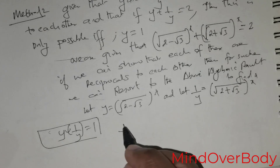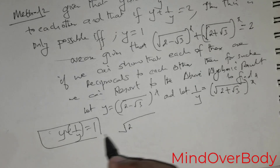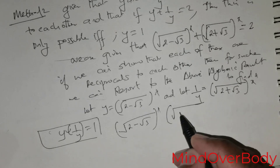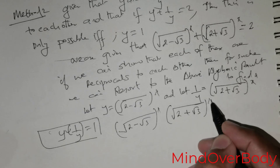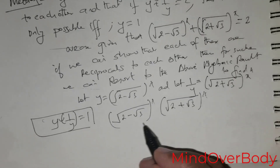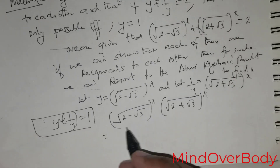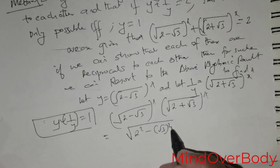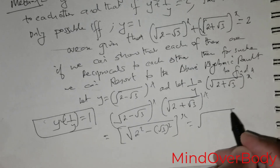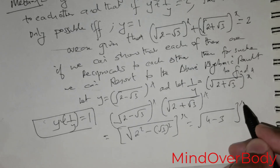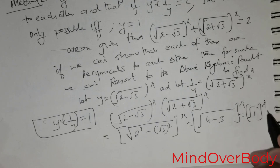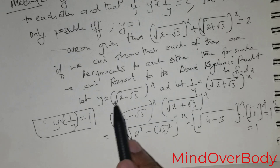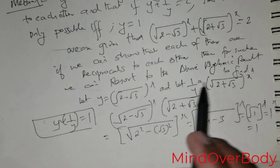So let us verify. I am going to multiply root of (2 - root 3) raised to the power x with root of (2 + root 3) raised to the power x. This gives root of (2² - (root 3)²) raised to the power x, which equals root of (4 - 3) raised to the power x, which equals root of 1 raised to the power x, equals 1. So clearly these two quantities are reciprocals to each other.